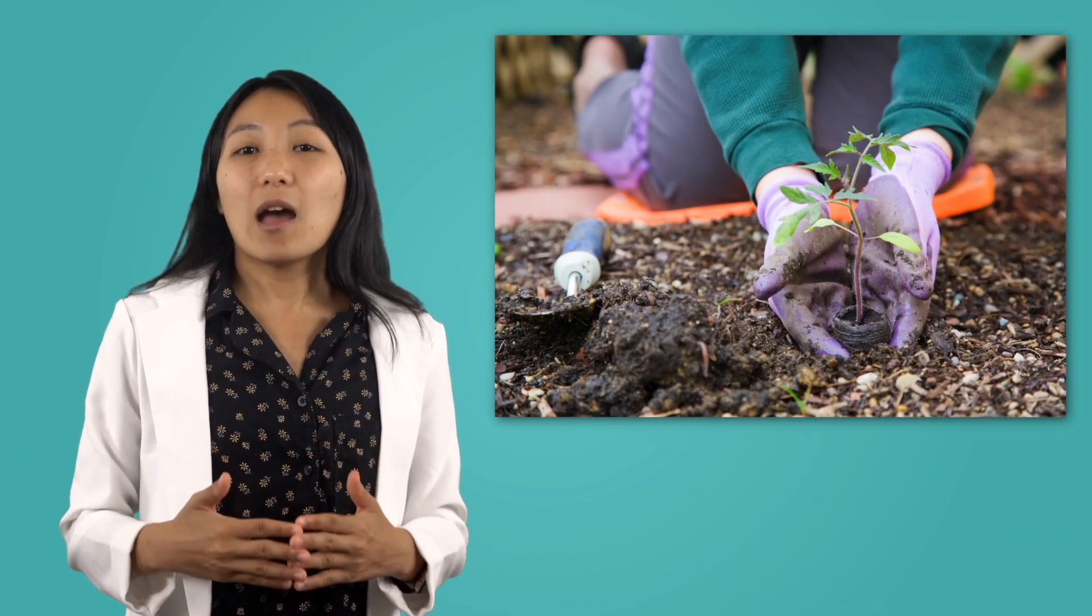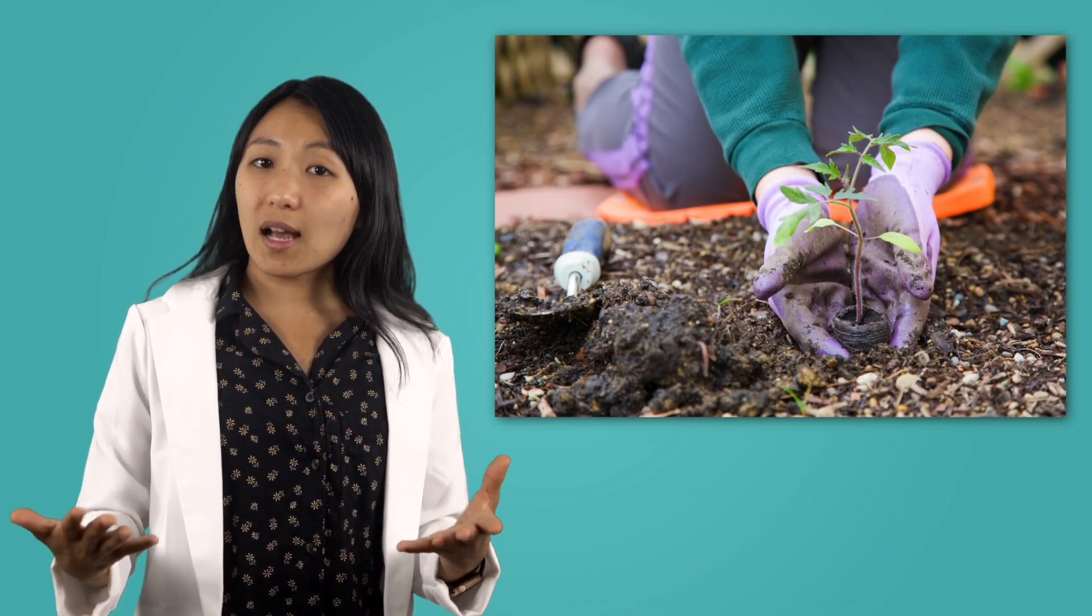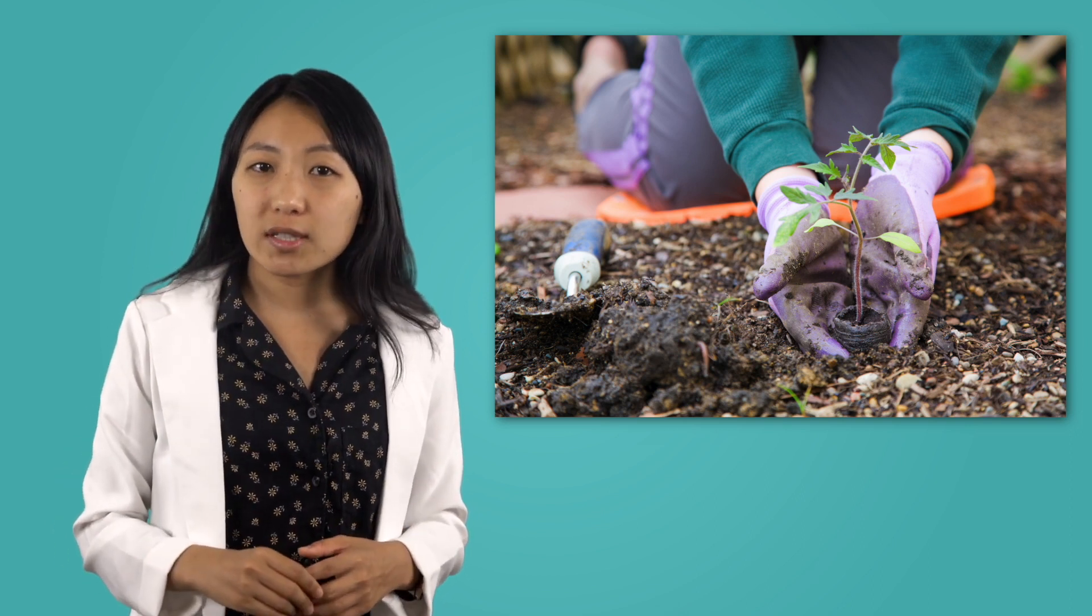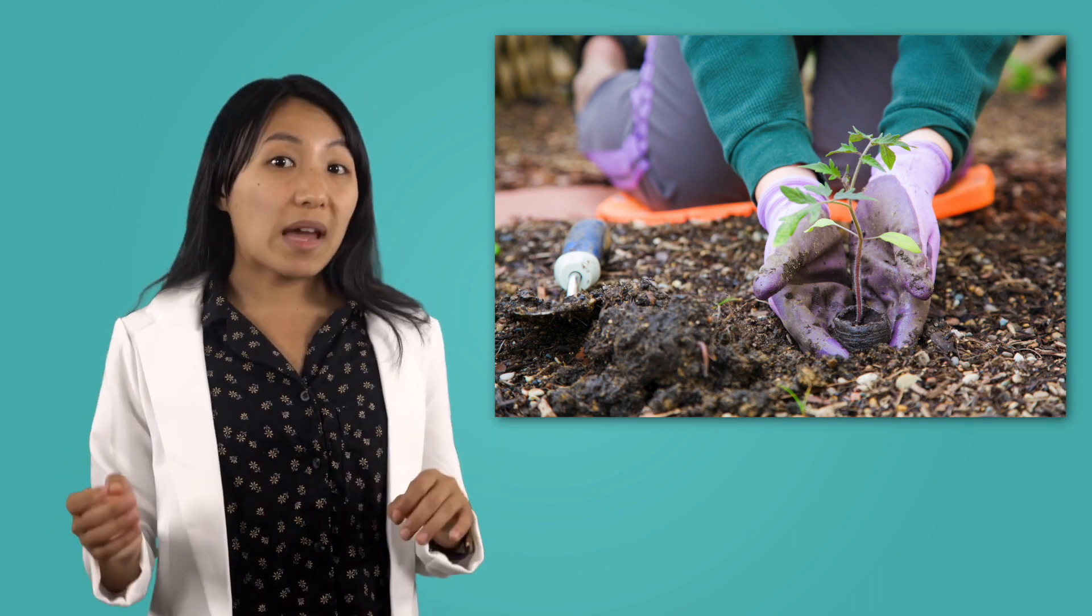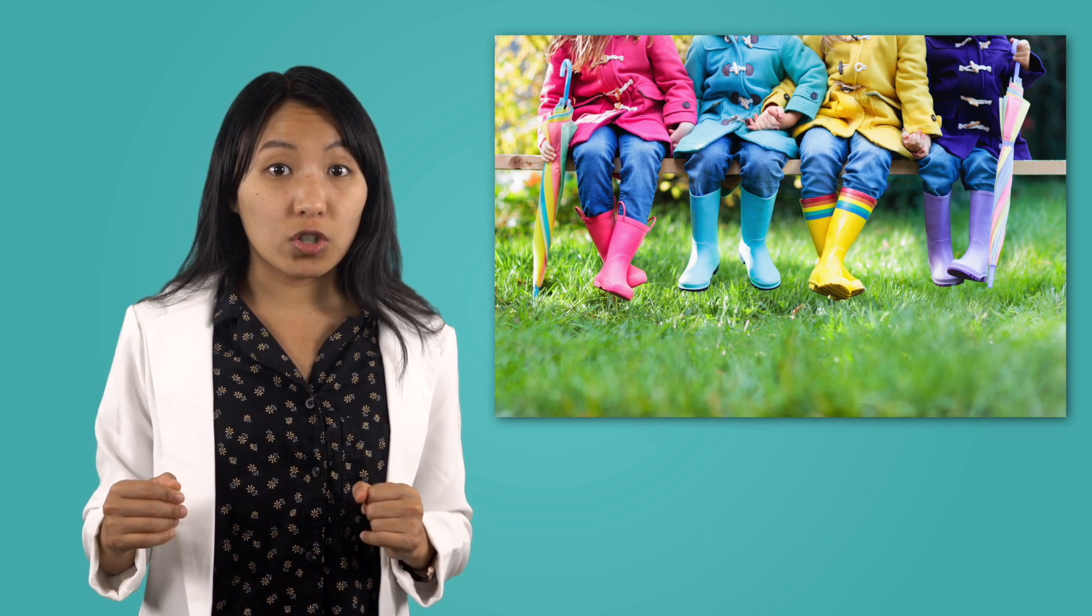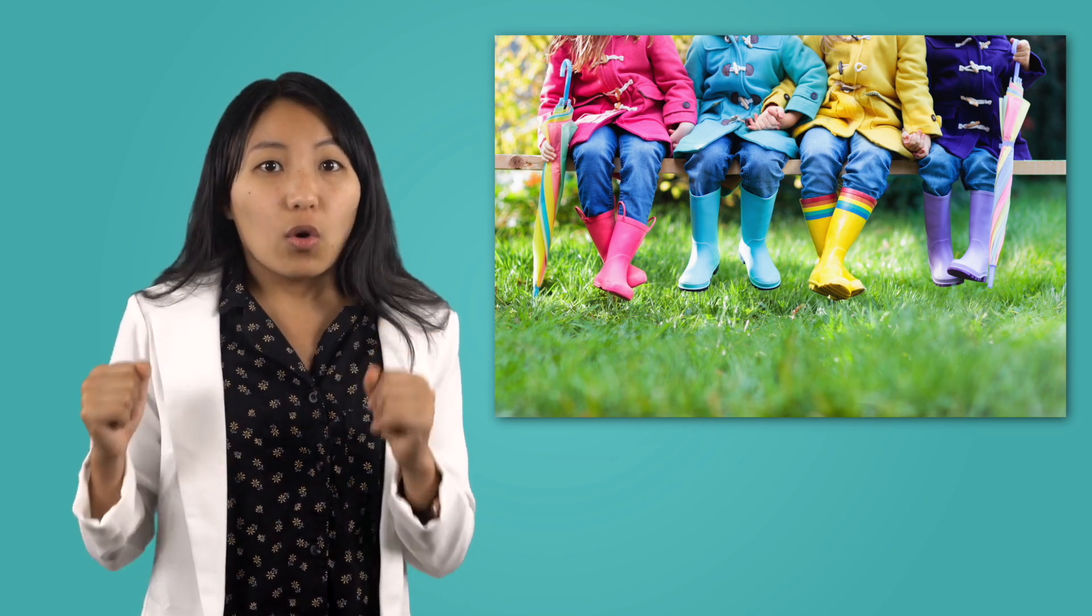In the springtime, people plant in their gardens and begin spending more time outside again. You may notice people wearing different layers of clothing to stay prepared for unexpected weather. For example, you might wear a jacket over your shirt in case it gets chilly, or you might bring a raincoat in case you get caught in a spring rain shower.